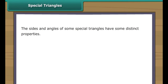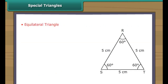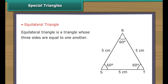Special triangles. The sides and angles of some special triangles have distinct properties. These special triangles are the equilateral triangle, the isosceles triangle, and the right-angled triangle. Let us learn about them. Equilateral triangle: an equilateral triangle is a triangle whose three sides are equal to one another. In triangle RST, RS equals ST equals TR.